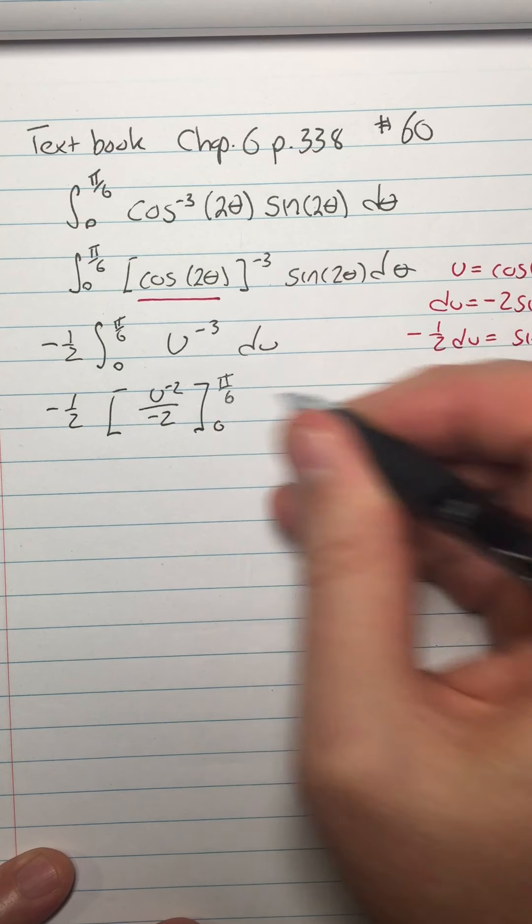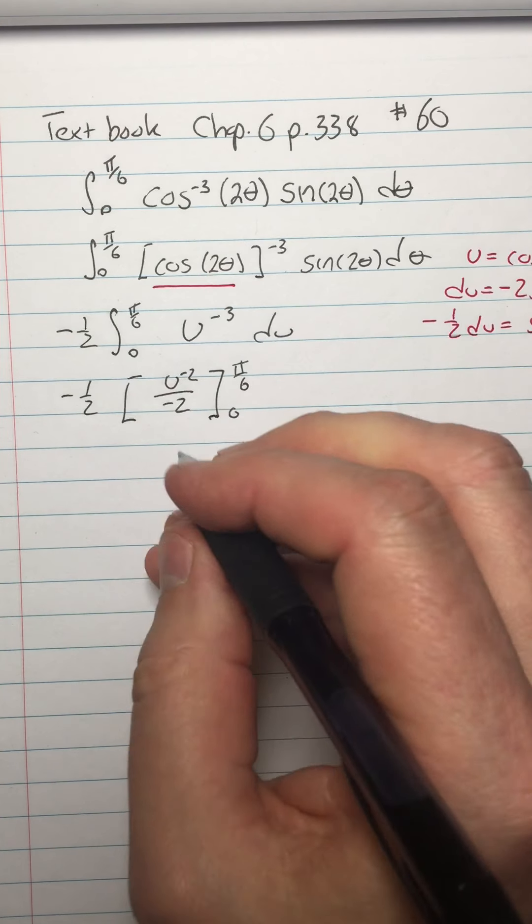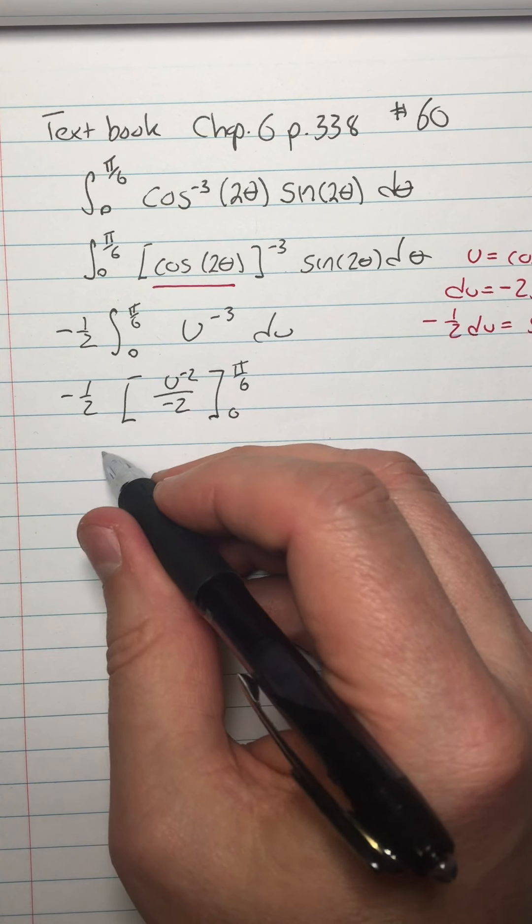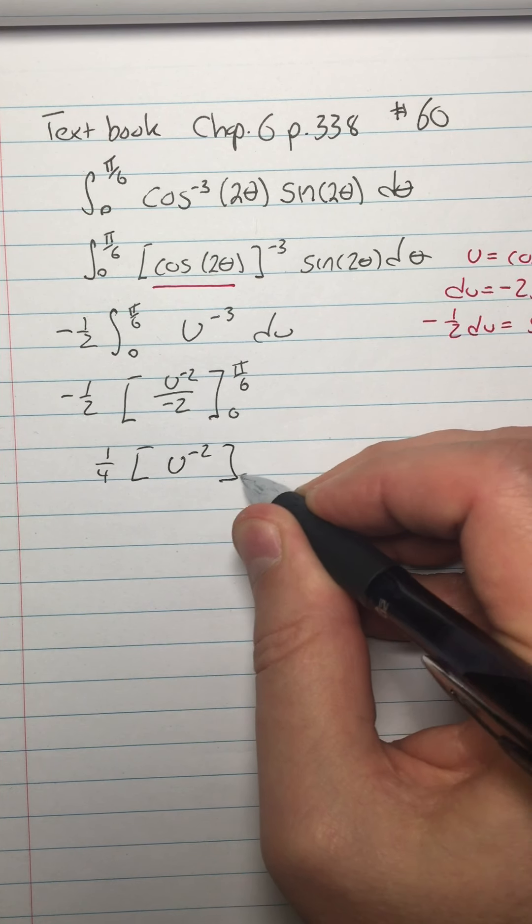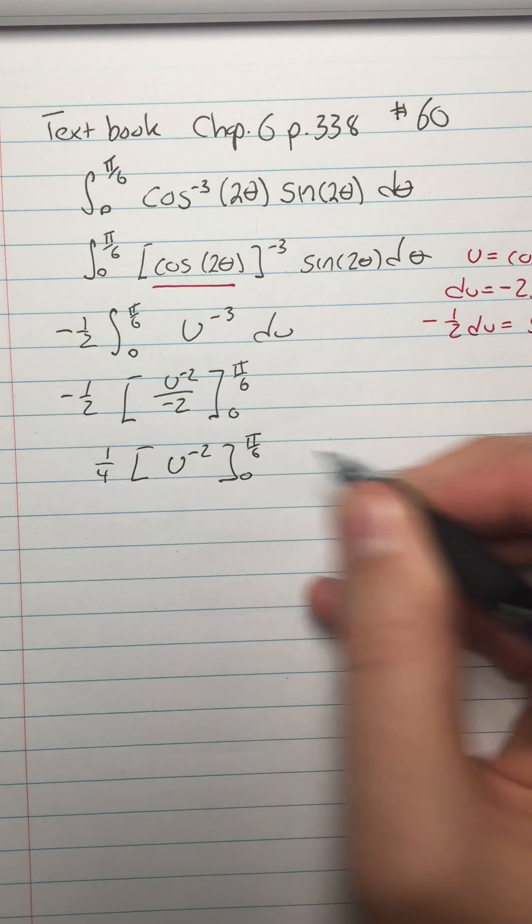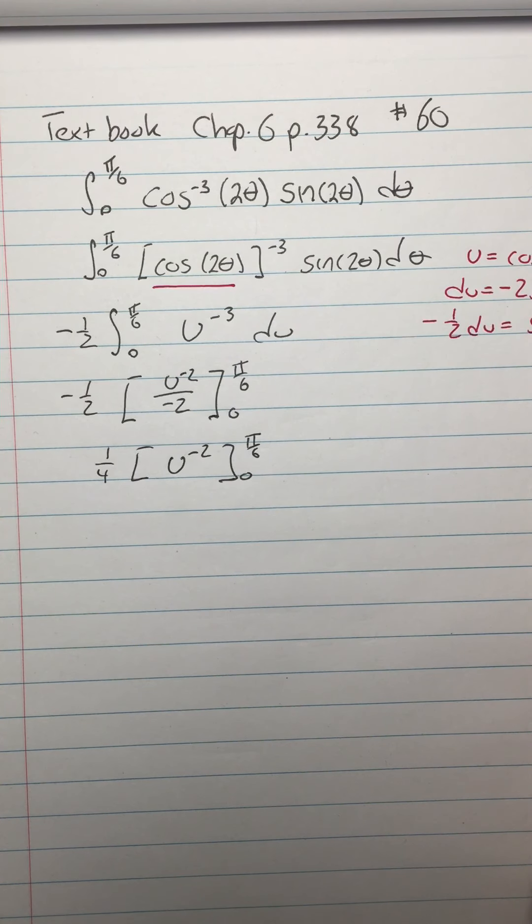0 to pi over 6 using the Reese-Cheater method, and then I'll pull the 2 out. I think that'll make it easier. So then I'll have one-fourth the evaluation of u to the negative 2 from 0 to pi over 6, where the 0 to pi over 6 are limits on theta, not u.